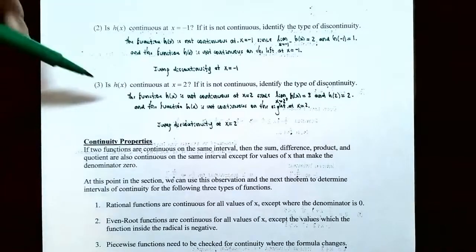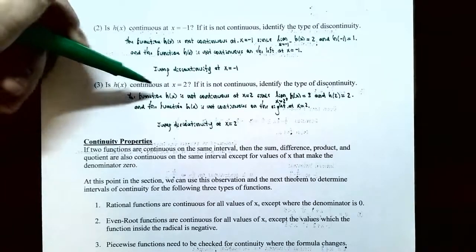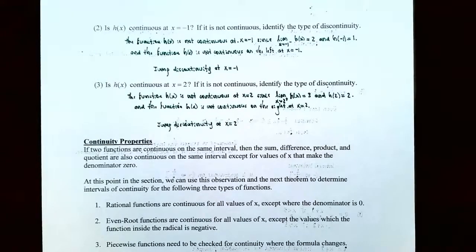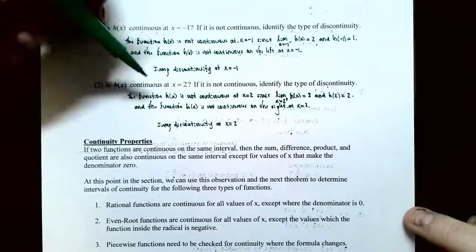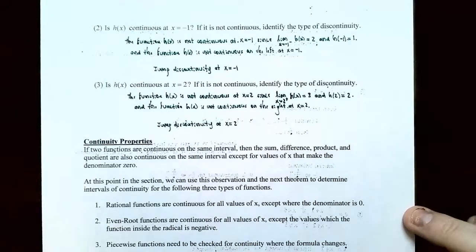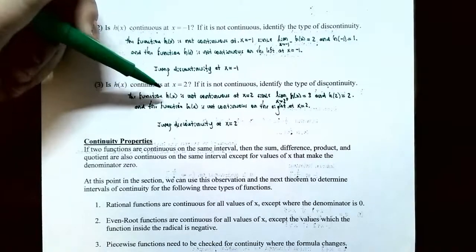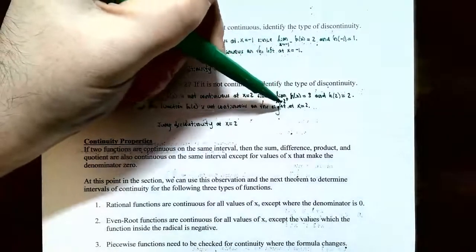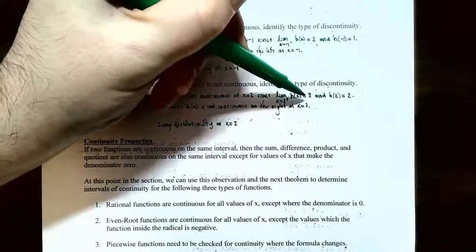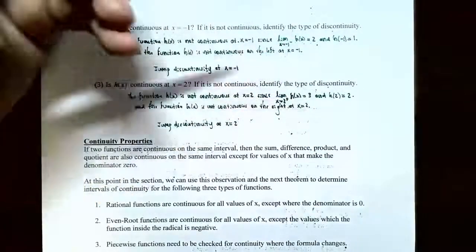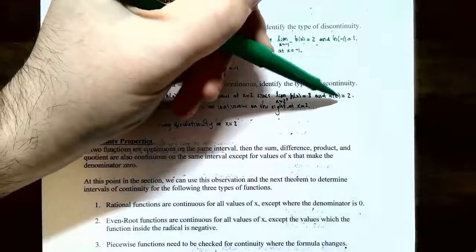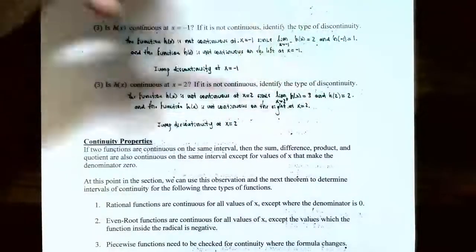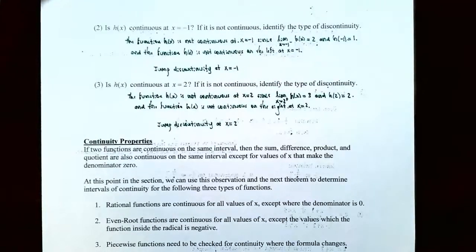Number 2: Is h(x) continuous at x equals −1? Using the two-sided limit definition, the limit from the left at x = −1 is 2, but h(−1) = 1. These are not equal, so the function is not continuous at x equals −1 — it's a jump discontinuity. Number 3: Similarly, at x equals 2, the limit from the right is 3 but h(2) = 2, so there's a jump discontinuity at x equals 2 as well.